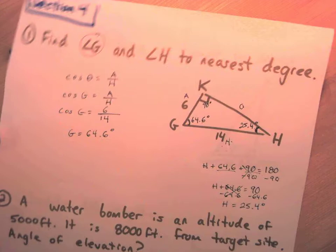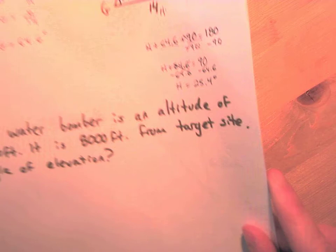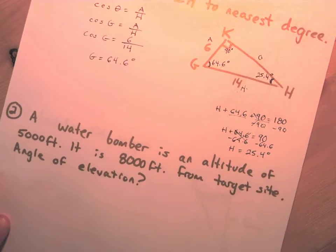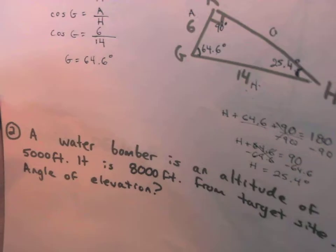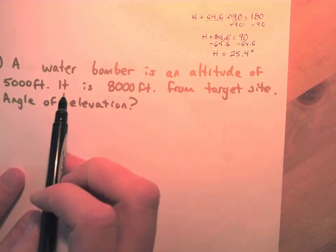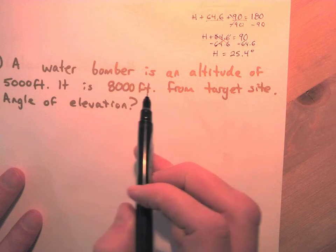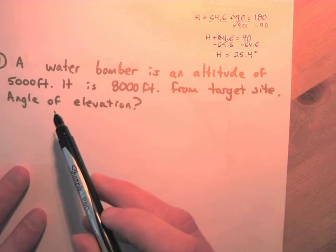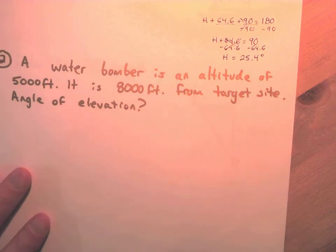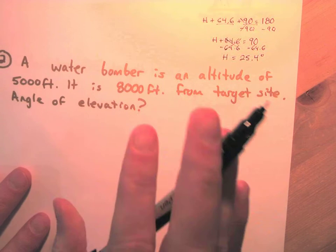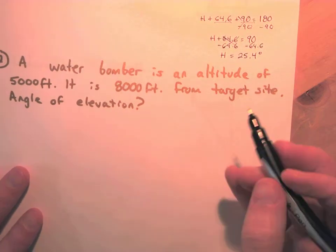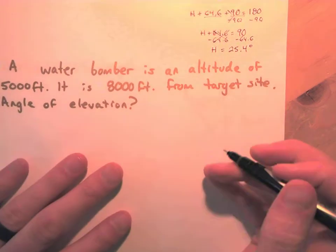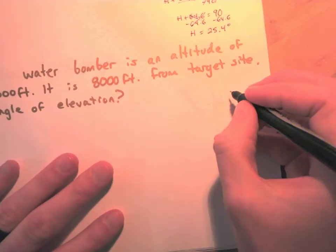Question two: a water bomber is at an altitude of five thousand feet and is eight thousand feet from its target site. What's its angle of elevation? Angle of elevation means from where you are horizontally and upward.